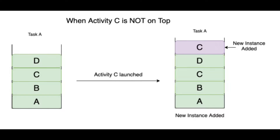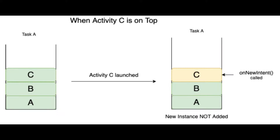This applies only if the identical instance does not already exist at the top of the stack. For example, suppose we have four activities: Activity A, B, C, and D, and we are starting Activity C from Activity D. Then a new instance for Activity C will be added on top. But if Activity C is already at the top of the task, no new instance will be added for Activity C.